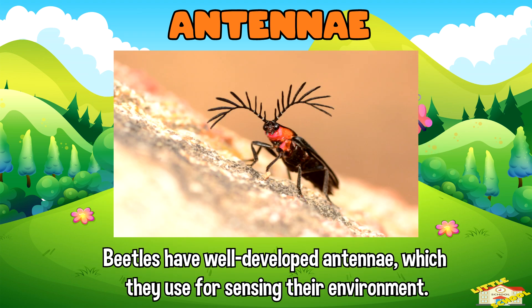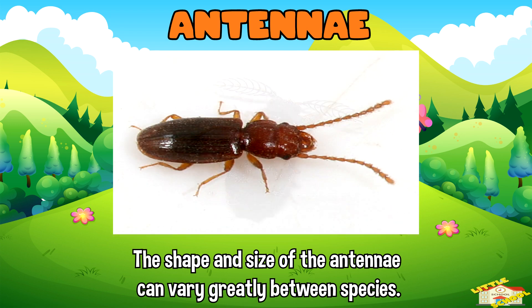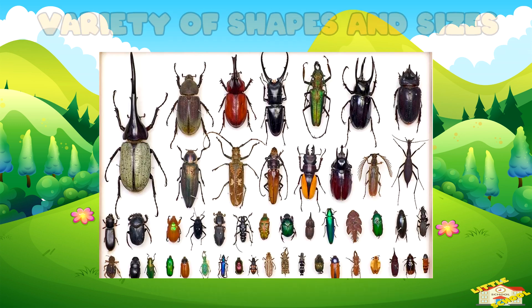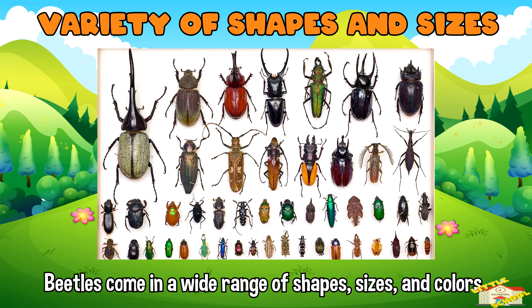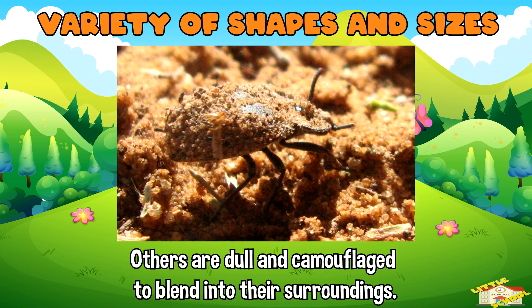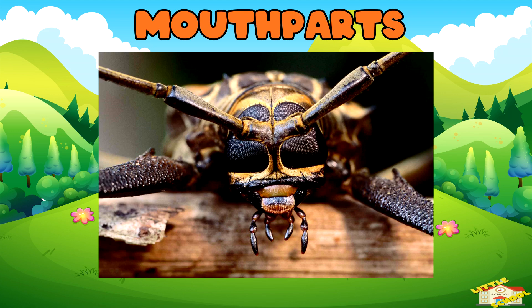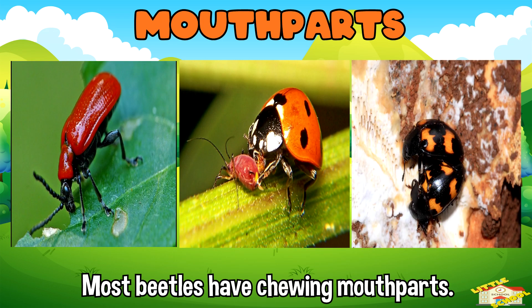Antennae: beetles have well-developed antennae which they use for sensing their environment. The shape and size of the antennae can vary greatly between species. Variety of shapes and sizes: beetles come in a wide range of shapes, sizes, and colors. Some are brightly colored and metallic while others are dull and camouflaged to blend into their surroundings. Mouthparts: most beetles have chewing mouthparts and feed on a wide variety of materials including plants, other insects, fungi, and decaying organic matter.